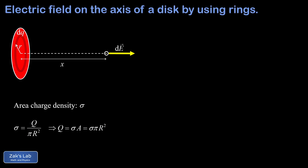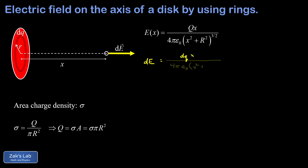Now it's time to figure out the field contribution due to a ring of radius little r. We start with our original formula for the electric field due to a ring of charge and adapt it for the rings we're chopping our disk into. The total field contribution is now differential — that's dE — and instead of a charge of Q, it's an incremental charge dq. Instead of a radius R for the outer disk, it's a radius little r for the variable radius of these rings.